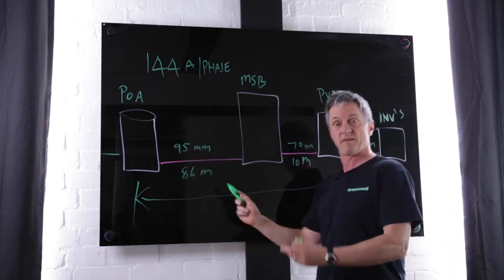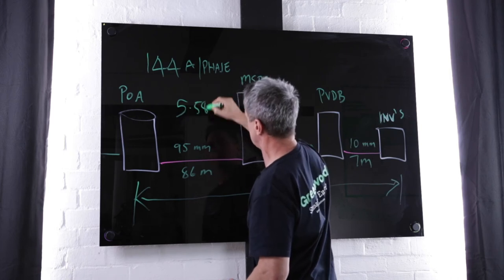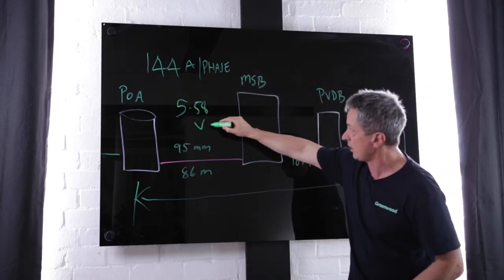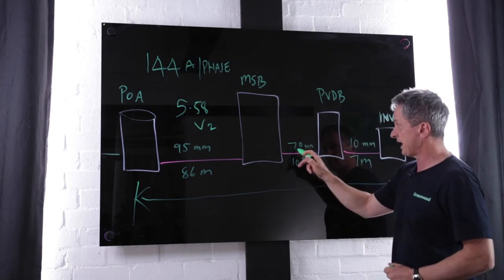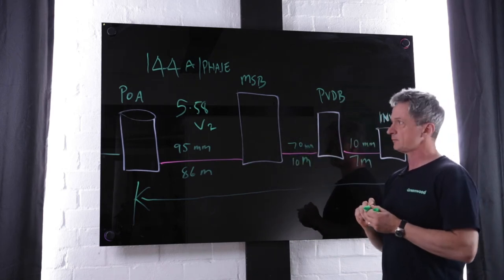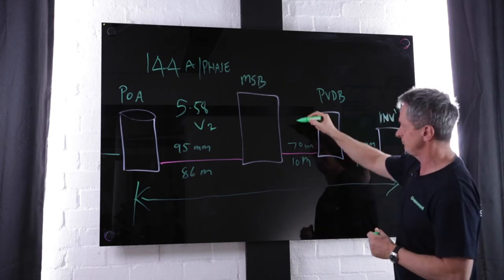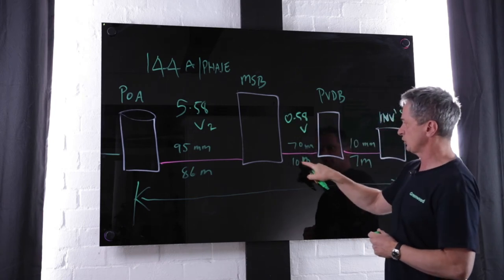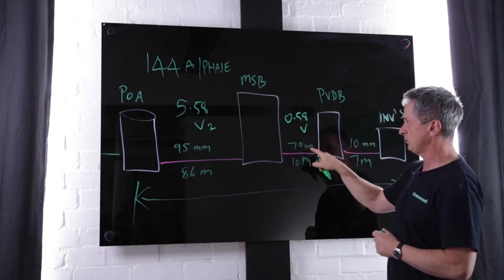Doing that, we found the volt rise was 5.58 volts for that section. For the short run — 10 metres using 70mm² cable — the calculation came in at about 0.58 volts.